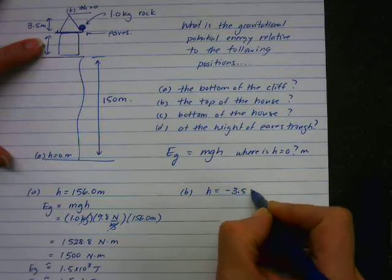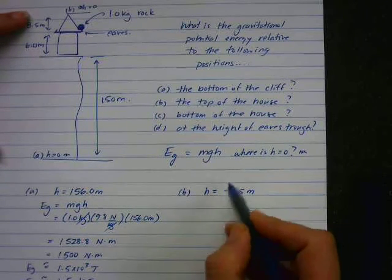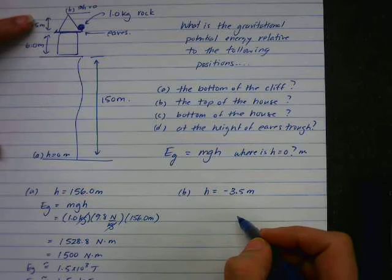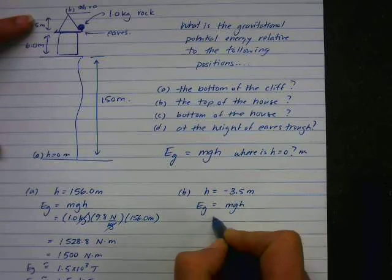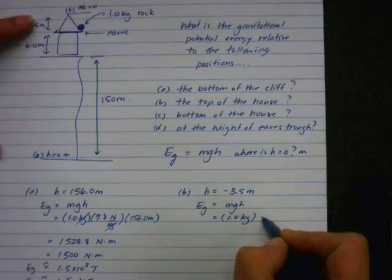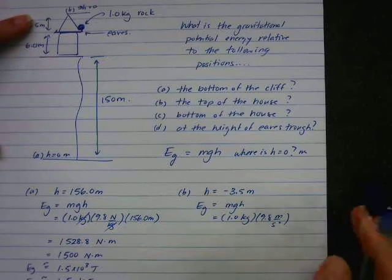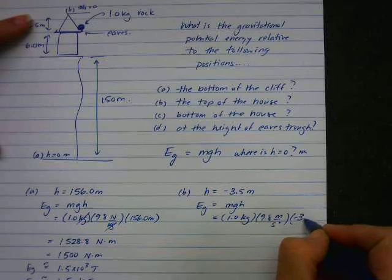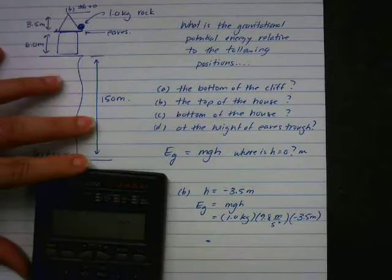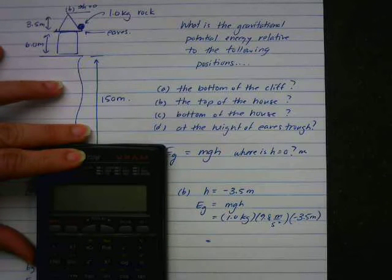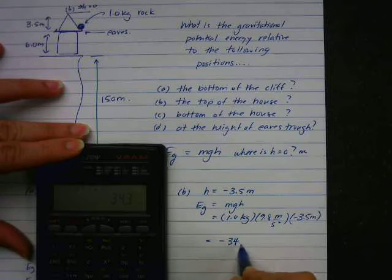Same deal. E_g equals mgh. 1 kilogram, 9.8. And you can put meters per second squared or newtons per meter. Either way, you are going to get joules. Go ahead, put that in. 9.8 times 3.5. You get negative 34.3.